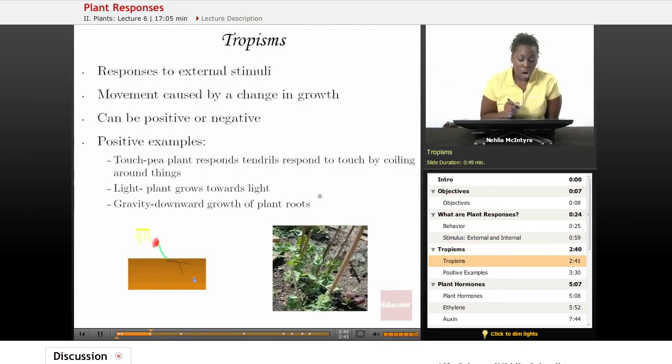Tropisms are the word that we use to describe the responses that plants and other organisms have to external stimuli. Tropisms are responses that cause a movement or a change in growth of a plant.